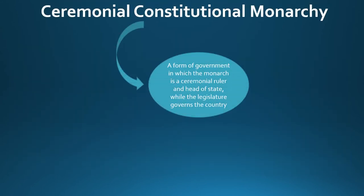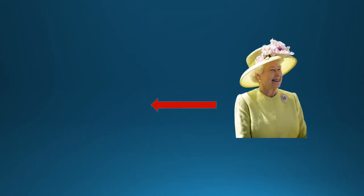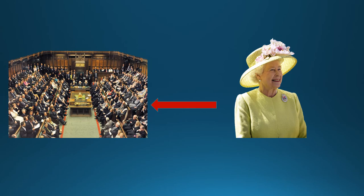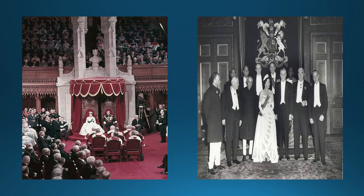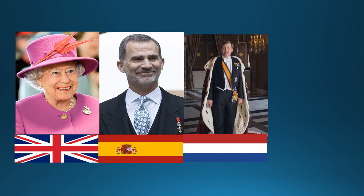A ceremonial constitutional monarchy is a form of government in which the monarch is a ceremonial ruler and head of state, while the legislature actually governs the country. The monarch is not very politically powerful and is tasked with ceremonial roles such as dissolving and convening the legislature, heading cabinet meetings, and formally approving laws through royal assent — which is a formality. Monarchs in ceremonial constitutional monarchies typically do little to intervene in governance and serve as the nation's figurehead both at home and abroad. Examples are the United Kingdom, Spain, the Netherlands, and Thailand.